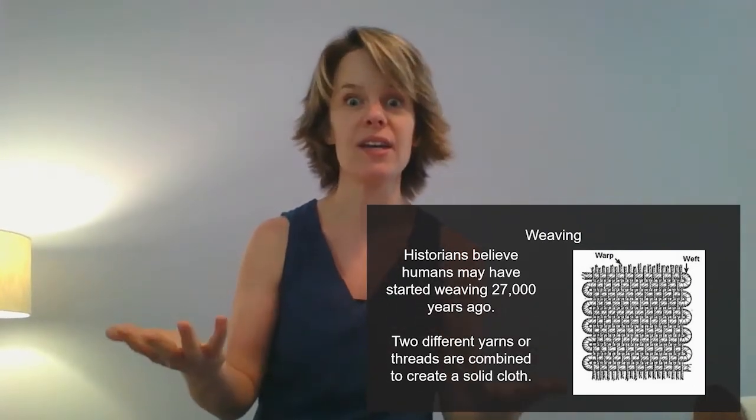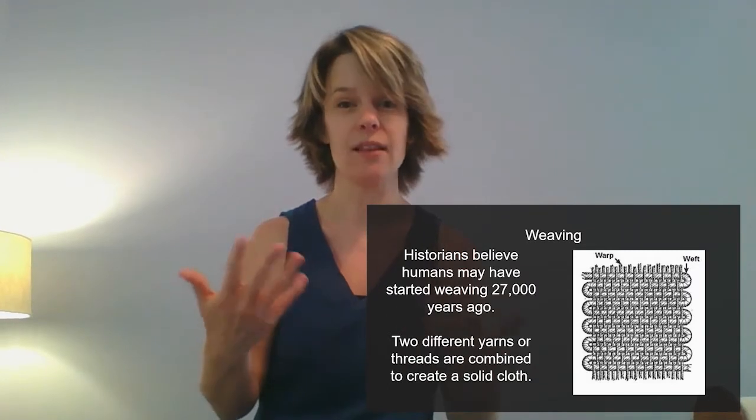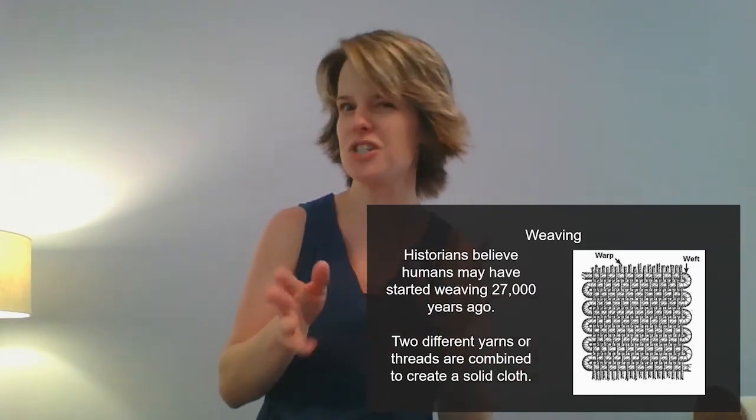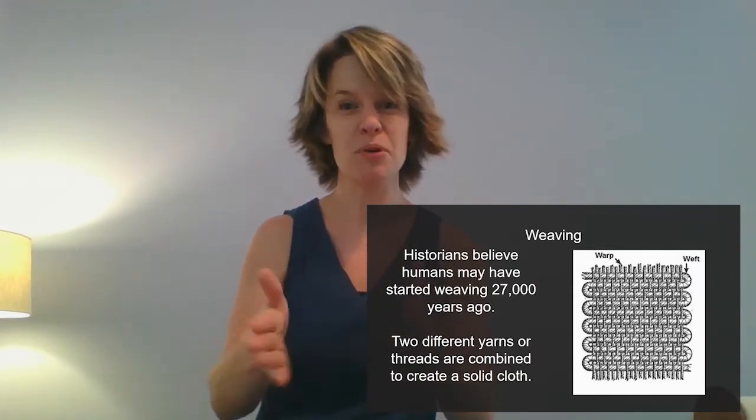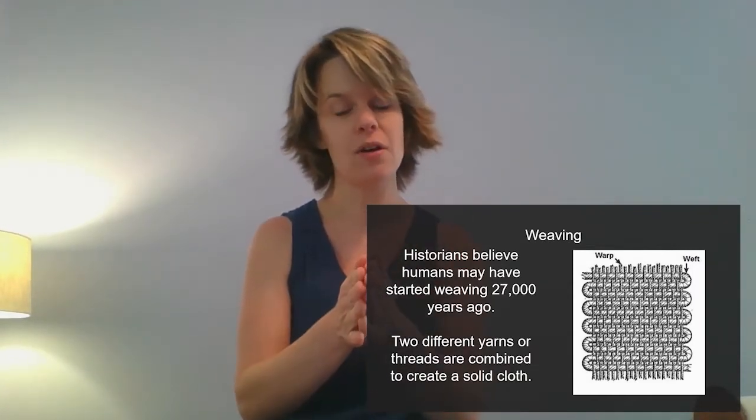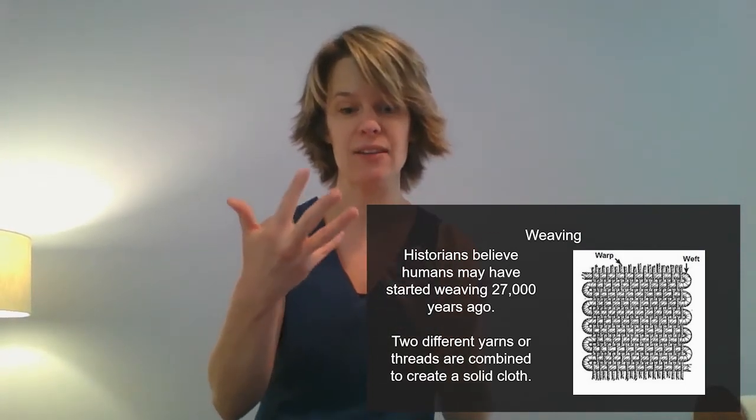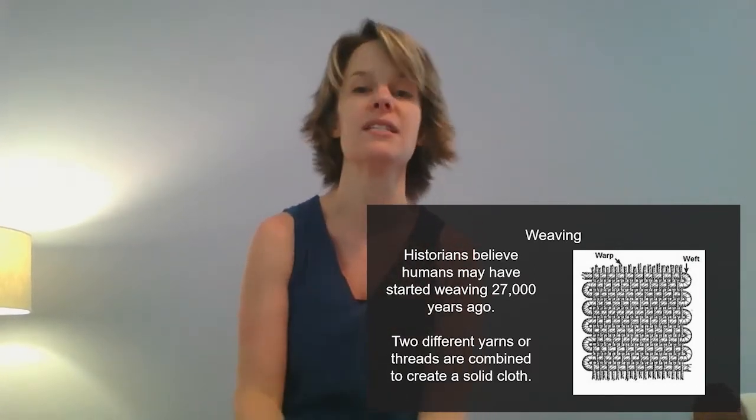Obviously they don't have any fabric that is that old, but they found imprints that have been fossilized that suggest a texture of weaving that humans were weaving cloth back then. When I say weaving, weaving is just combining two different threads to make a solid piece of cloth. So there's a lot of different ways you can do thread. People talk about knitting, which is like a cousin of weaving. You have sewing, which is putting two pieces of fabric together. But weaving is actually taking those two separate threads and interlocking them to create a new piece of fabric.